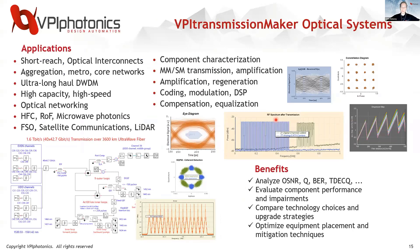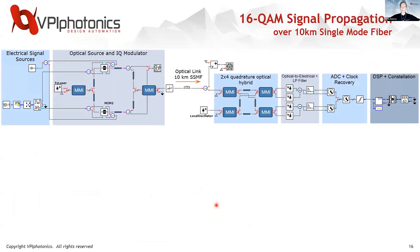Moving up to the next level — VPI Transmission Maker Optical Systems. Applications include short-reach and long-haul DWDM systems, radio-over-fiber, microwave photonics, free-space optical applications like satellite communications, and we've been seeing more interest in LiDAR. Benefits include a wide range of analyses: we can study OSNR, bit error rate, TDEQ of the system, and compare different technologies and designs. I'll walk through one application here — a 16-QAM signal over 10 kilometers of single-mode fiber.